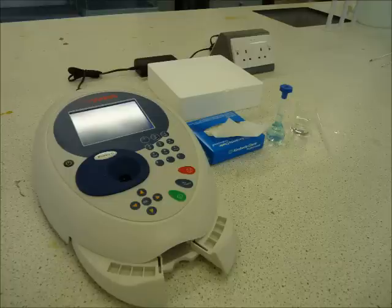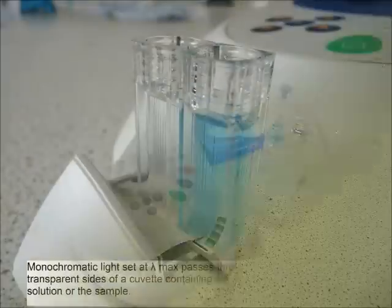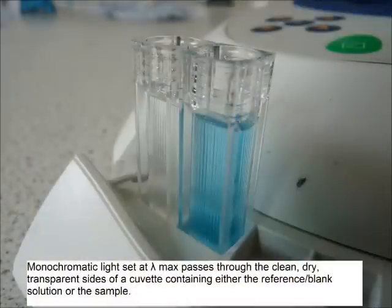UV visible spectroscopy is a method of quantitative analysis and it can be used to determine the concentration of a solution once a calibration curve has been performed. The procedure is based on the amount of light absorbed as it passes through a sample.